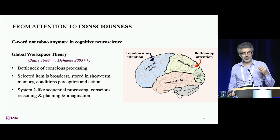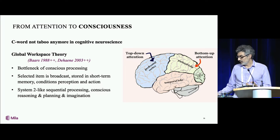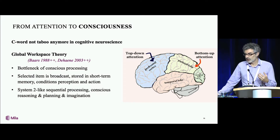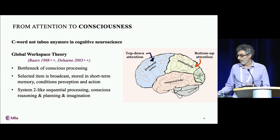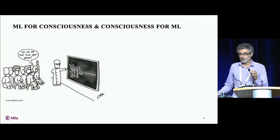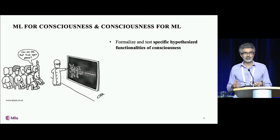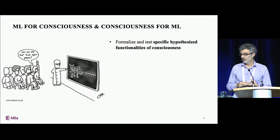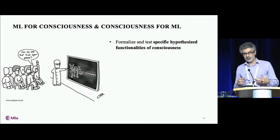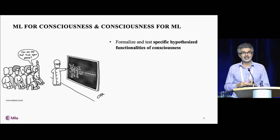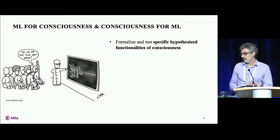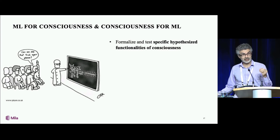This is related to short-term memory, where the things that have been selected are available and condition heavily perception and action. It also gives rise naturally to the kind of system two abilities I've been talking about. Machine learning could be used to help brain sciences better understand consciousness, but our understanding of consciousness could also help machine learning develop better abilities. The work done in neuroscience is based on fairly qualitative descriptions of functionalities associated with consciousness, and what machine learning can do is help us formalize in a more mechanistic way what these exactly mean. That could feed back into neuroscience research to provide more specific testable predictions of these theories.